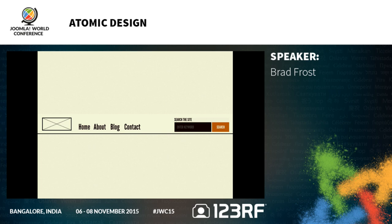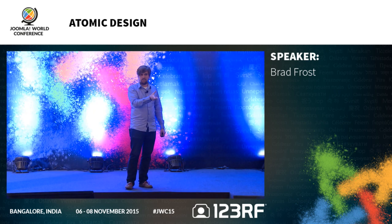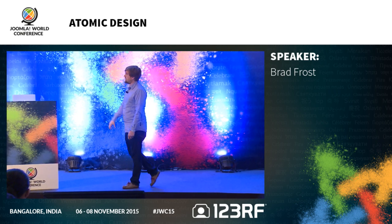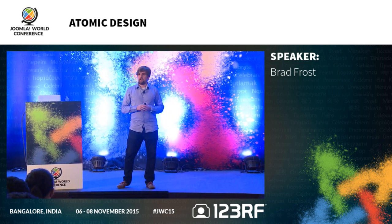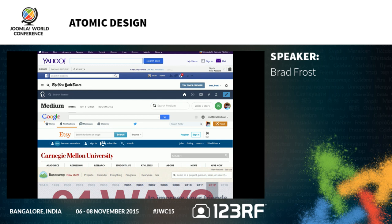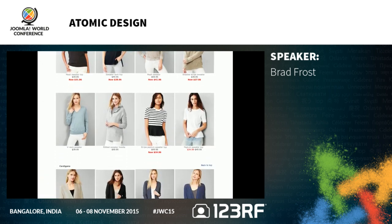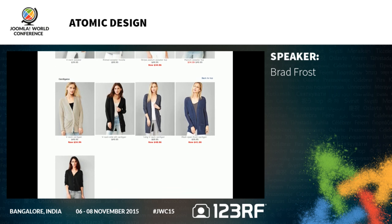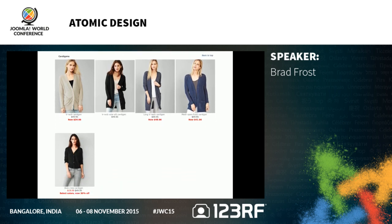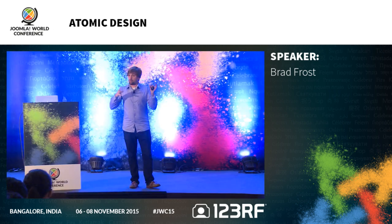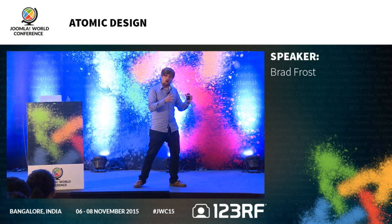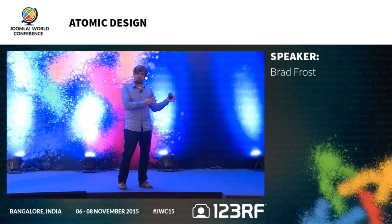At the organism level, we take that search form molecule and put it into context — say, the header of a website. This header organism might be comprised of a logo atom, a primary navigation molecule, and a search form molecule — all forming a distinct chunk of interface, a distinct section of a page. We see this on literally every website. Or on an e-commerce site, the same product molecule repeated over and over in the context of a product grid organism. Organisms are relatively complex components, while molecules are relatively simple.